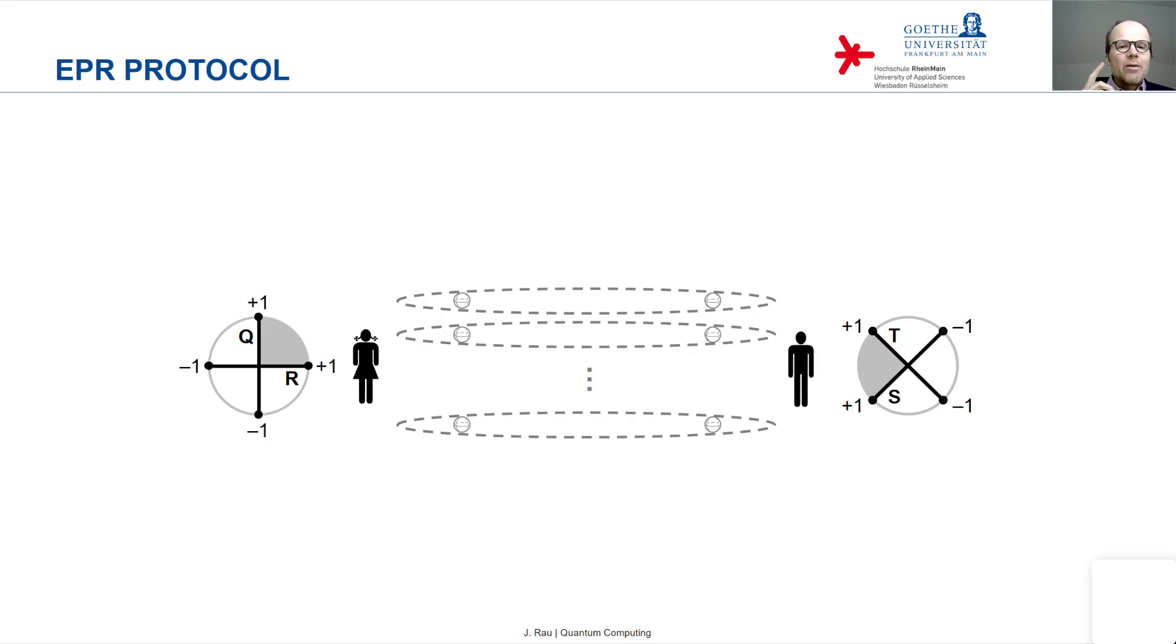However, there is now a modification. In addition to these two observables on each side, Alice and Bob are allowed to measure a third observable. Alice is allowed to measure also S, which is the same observable that Bob measures.